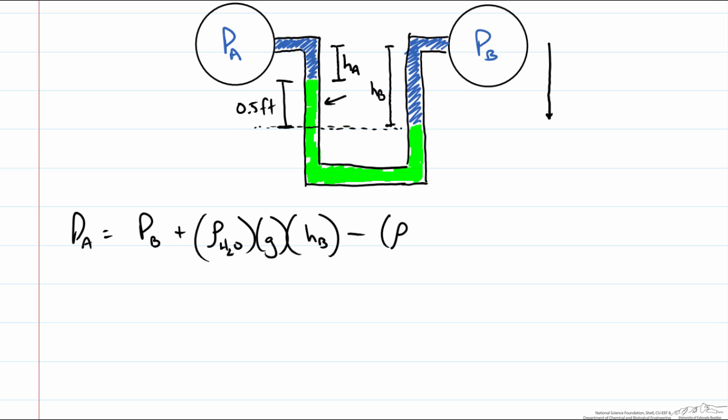So this is going to be the density of mercury times gravity times our height 0.5 feet and we are still moving up so that we can get to PA so we are subtracting out the density of water times gravity times the height of A. When we do this we reach the pressure at A.